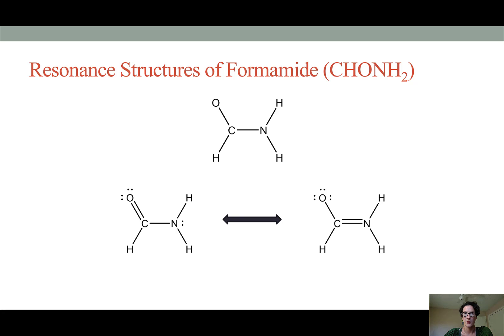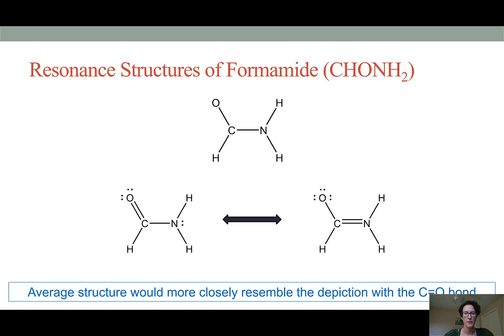Next, I'd like you to look at assigning the formal charges to these structures. On the one on the left, all of the elements are actually perfectly balanced in terms of the number of valence electrons they contributed and the number of electrons surrounding them in the Lewis structure. On the right-hand depiction, we see that our oxygen atom is carrying one extra electron compared to what it originally has, and our nitrogen atom is actually carrying one less. This means that we have a separation of charge on our formamide molecule. Therefore, the resulting structure of formamide is going to more closely resemble the depiction on the left with a double bond between the carbon and the oxygen.